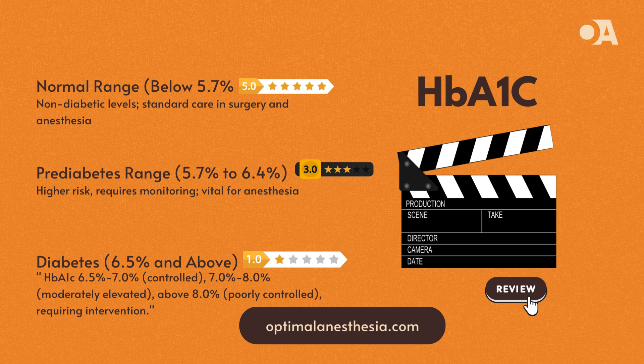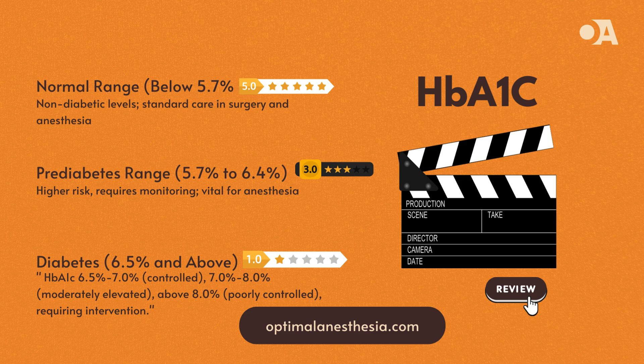HbA1c values between 5.7% and 6.4% fall into the pre-diabetes range, indicating higher than normal blood sugar levels — not high enough to be classified as diabetes — with increased risk for developing diabetes, requiring closer monitoring and potential lifestyle interventions. For anesthesiologists, awareness is key: these patients have a higher risk of perioperative hyperglycemia, so monitoring blood sugar levels during and after surgery is essential.